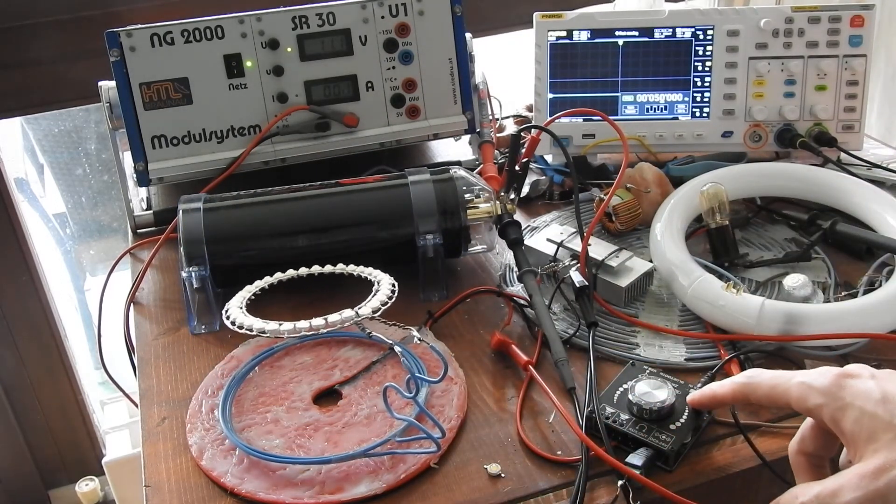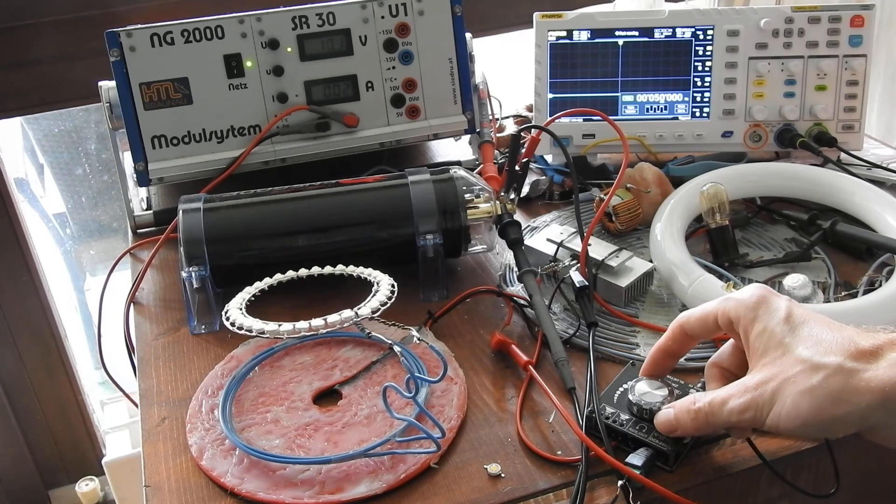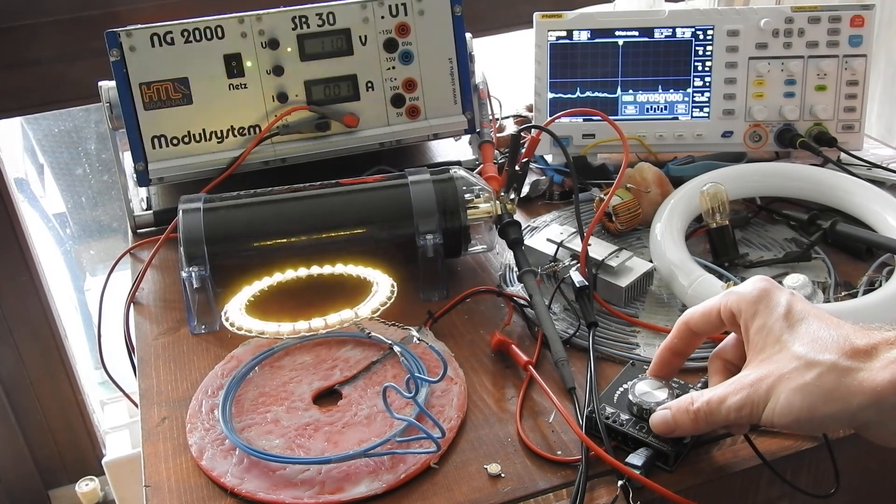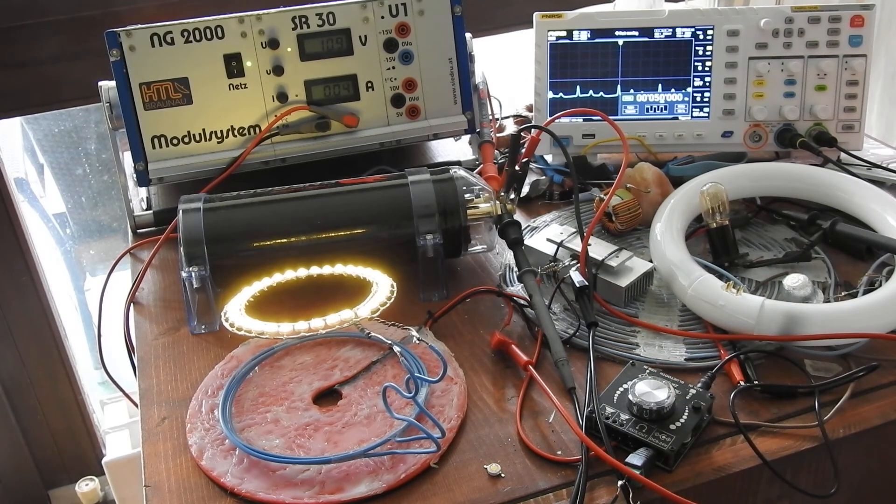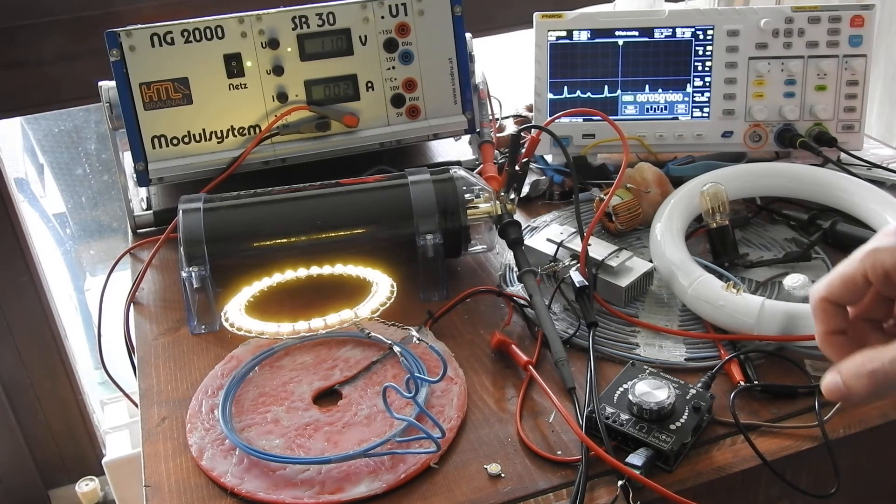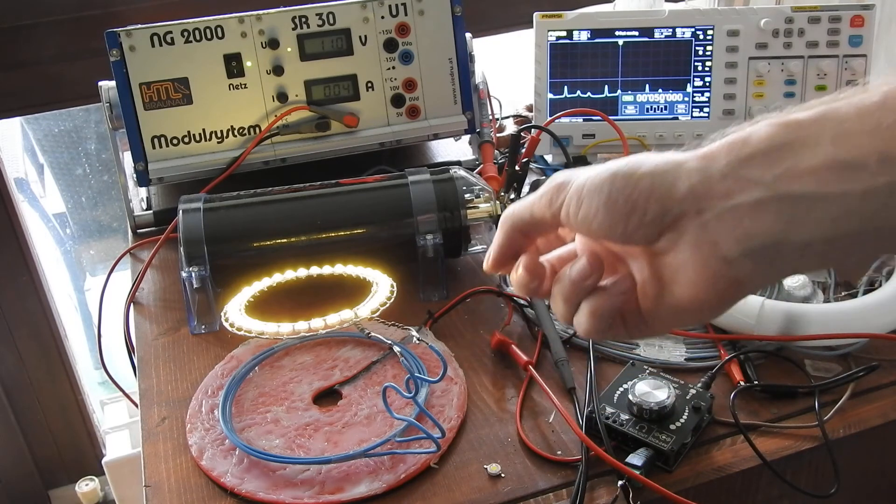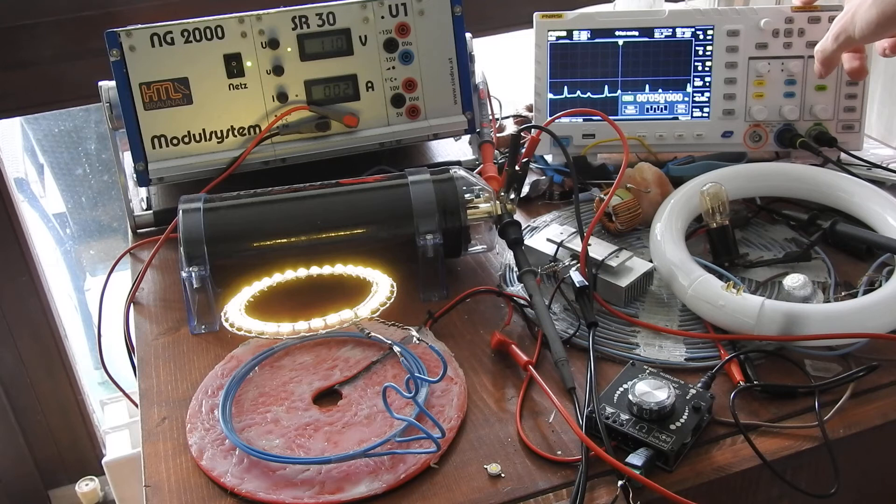So I will power it off and on again. Yeah, here we are. I had to adjust the output of the signal generator a bit. If I do this and go to a frequency of 50 kilohertz, the output of my power supply goes down.